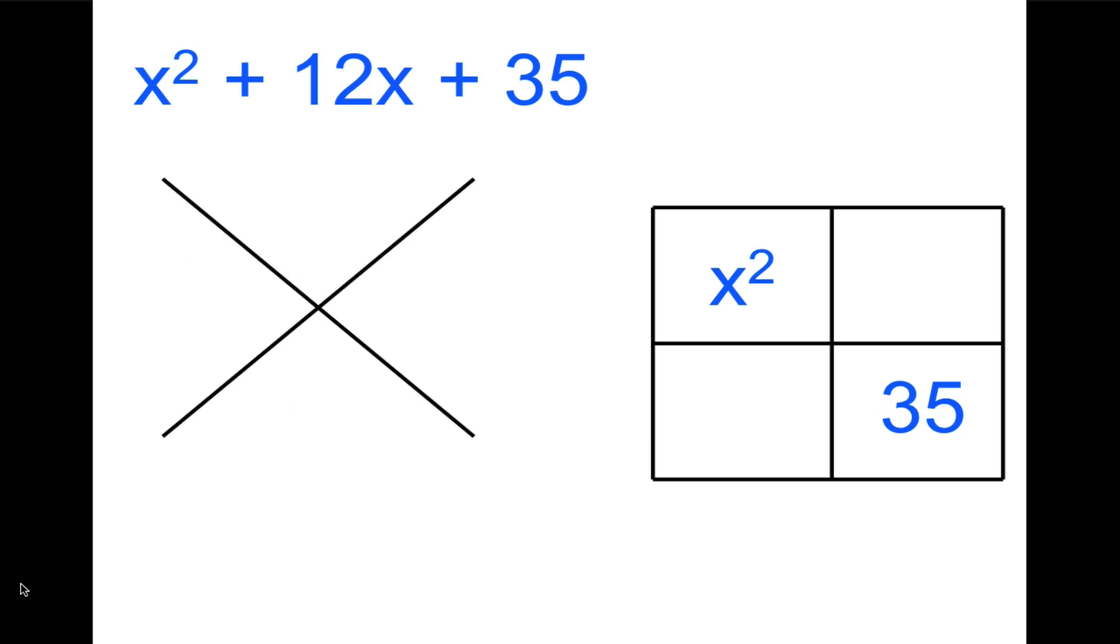The top of the diamond is going to be gotten by multiplying x² times 35, the first and last term. So we multiply those and we get 35x². The bottom, the sum of the diamond problem, is going to be that 12x. I know that's a lot to remember but we're going to practice it. Now everything is set up.